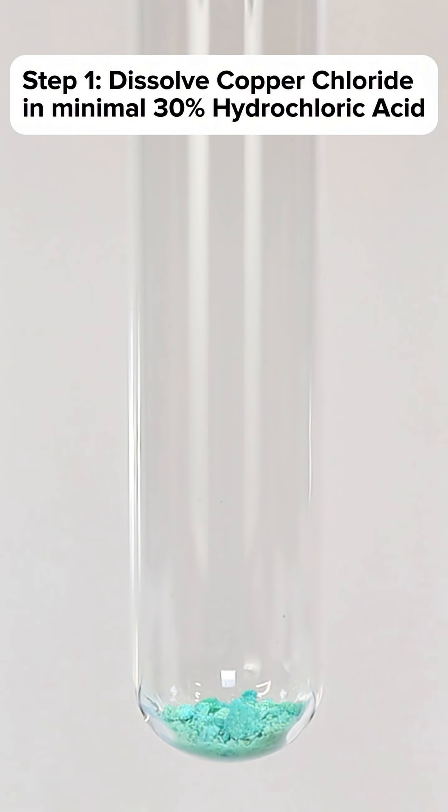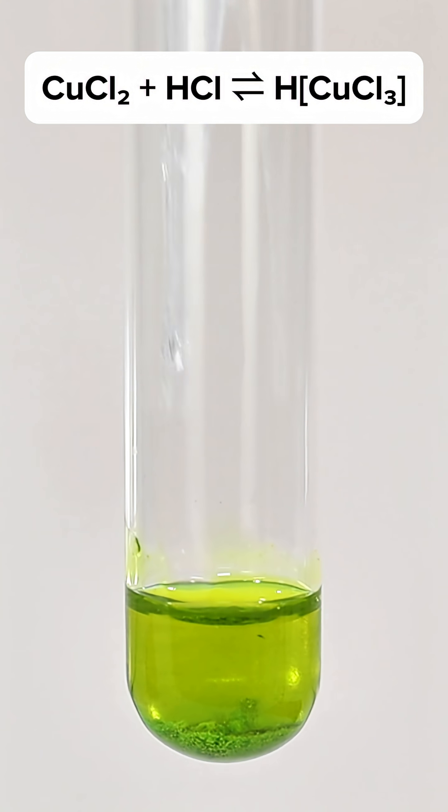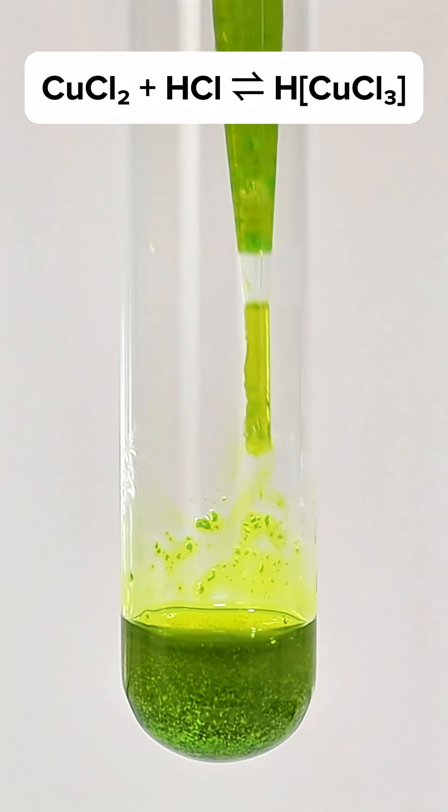To get started making it, I begin by adding some copper chloride to a test tube. I then add a minimal amount of concentrated hydrochloric acid and stir the two until the copper chloride is dissolved.